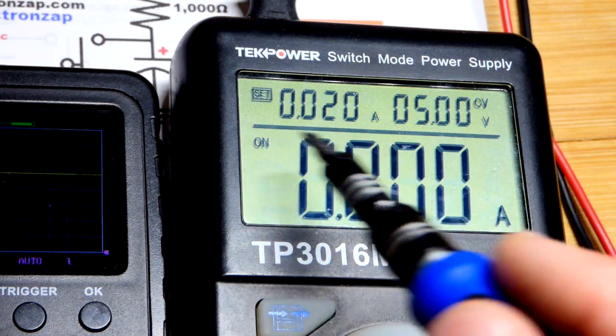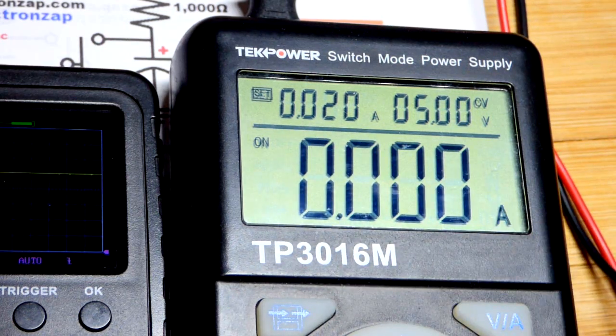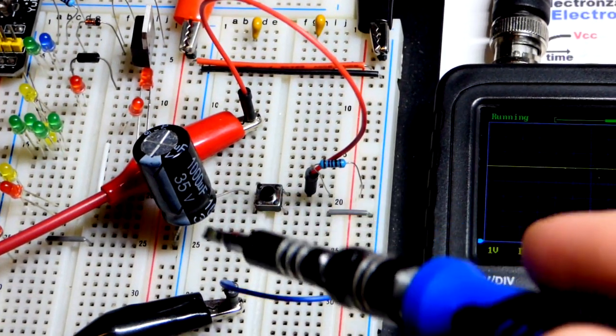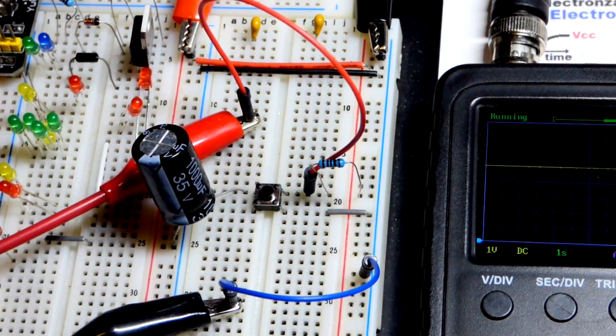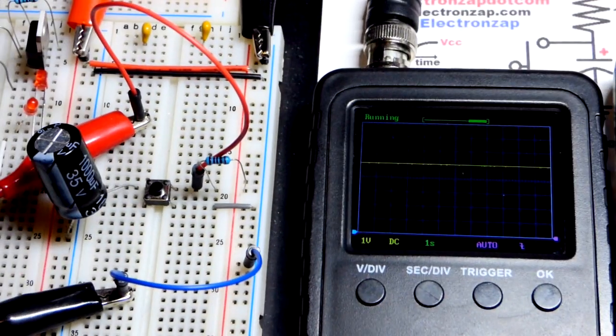We don't have to worry about that in this video. The burst of current is when the capacitor discharges and that current comes from the capacitor, so we'll be fine with this voltage.